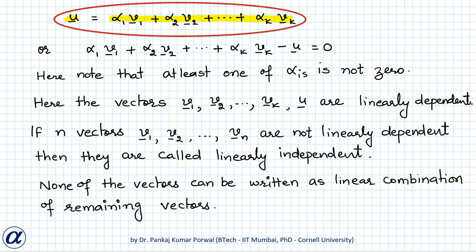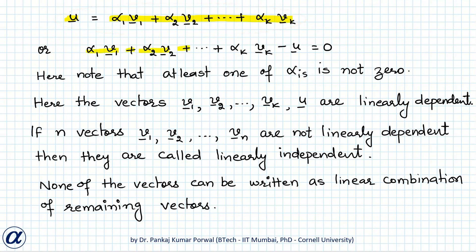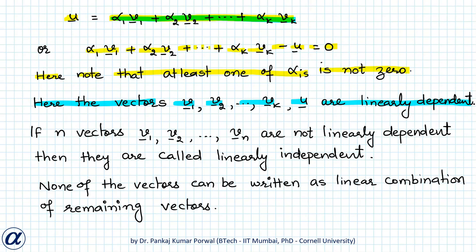This expression can be written as alpha_1*v1 + alpha_2*v2 + ... + alpha_k*vk - u = 0, where at least one of the alpha_i's is not zero. So a collection of vectors is said to be linearly dependent if a linear combination of that collection equals zero and at least one scalar coefficient is non-zero.